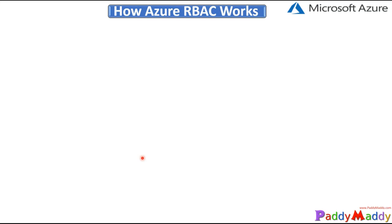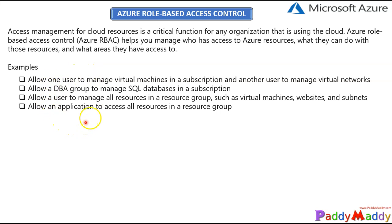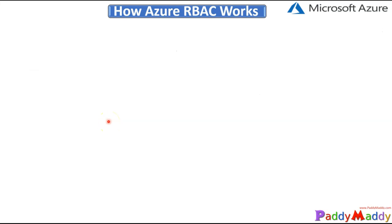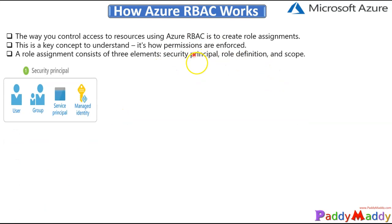Now let's jump into how Azure RBAC works. You need to understand in the backend how RBAC works, because in the previous examples we tried to control resources by using RBAC and assigning specific role assignments. That's a key concept to understand — this is how permissions are enforced. The role assignment consists of three different elements in the background.